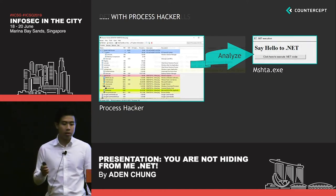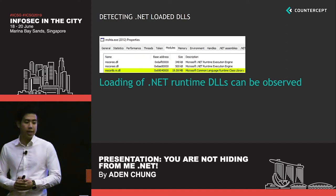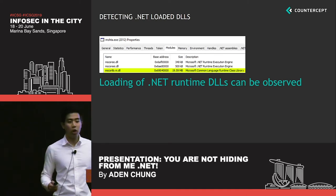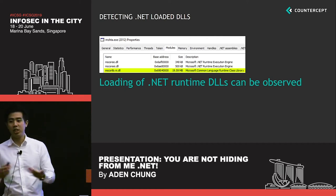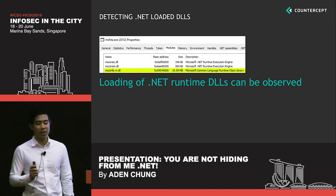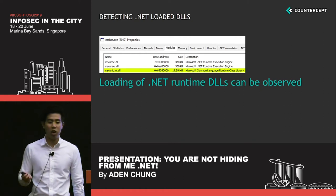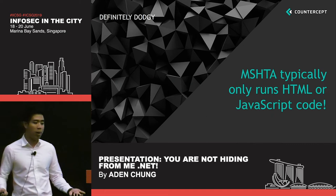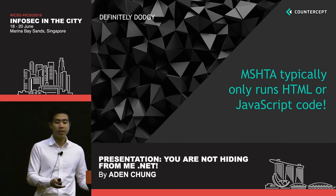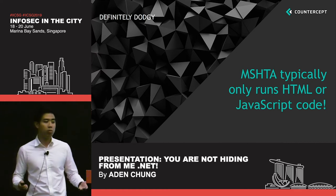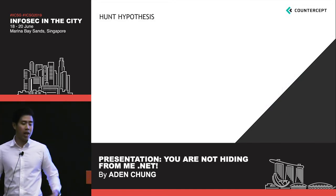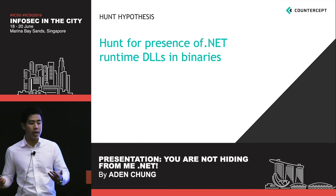Looking at the module loads within the MSHTA process, we can see something interesting: there are a couple of .NET runtime DLLs being loaded. This makes sense because the MSHTA process was running a .NET assembly and requires this runtime engine. This is suspicious — if we think about the typical behavior of MSHTA, it normally only runs HTML or JavaScript code. This logic doesn't only apply to MSHTA; you can apply it to other binaries that typically do not execute .NET code. With this, we can think of a hunt hypothesis: hunt for the presence of .NET runtime DLLs in these binaries.